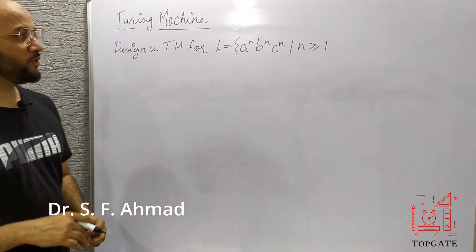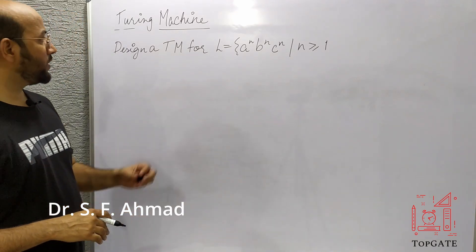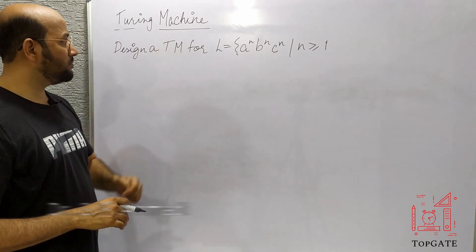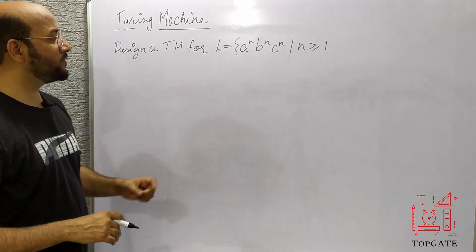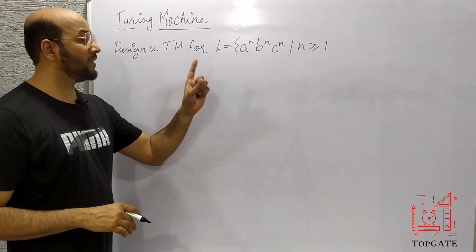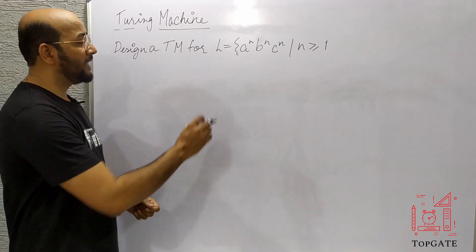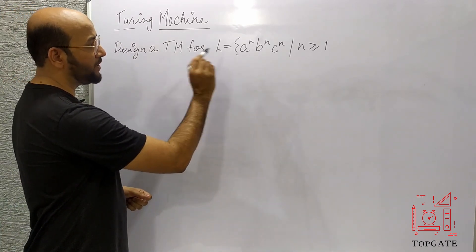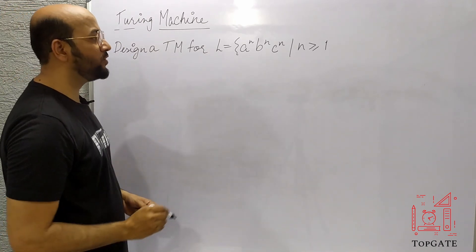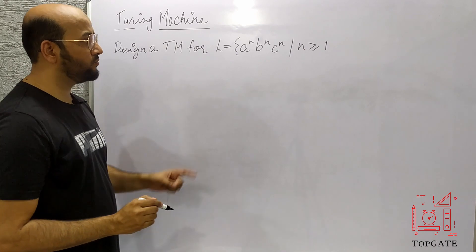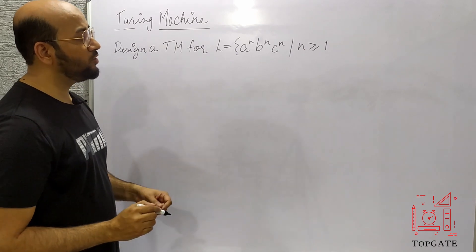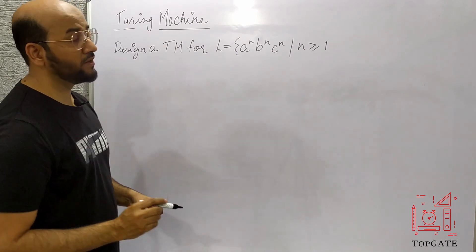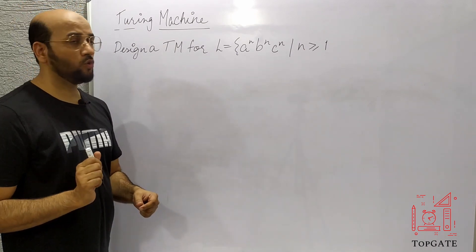Hello students. In this video I will discuss one Turing machine problem: design a Turing machine for the language L = A^N B^N C^N where N is greater than or equal to 1.